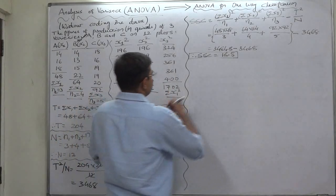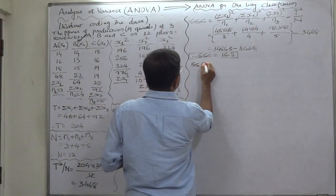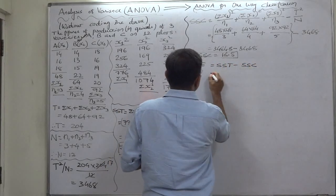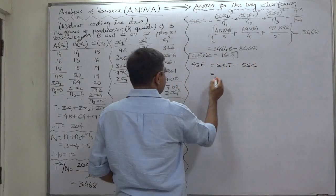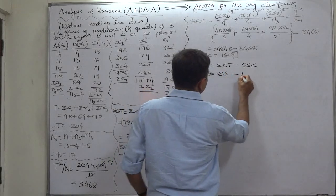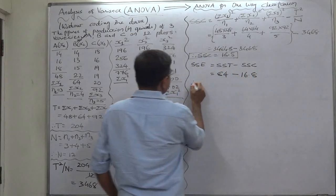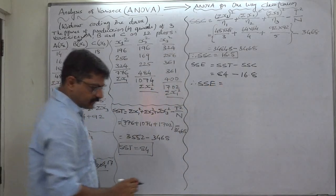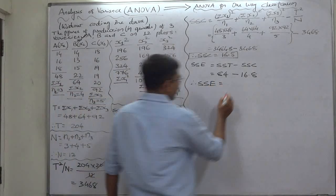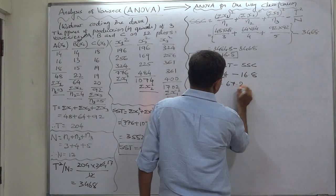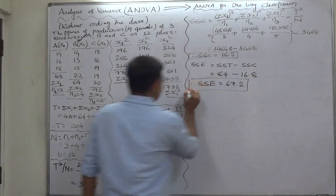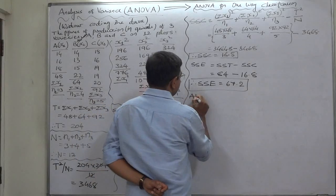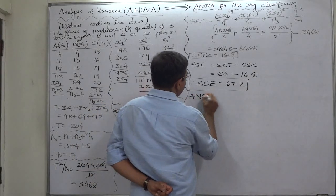Now SSE equals SST minus SSC. SST is 84 minus SSC 16.8, therefore SSE = 67.2. Now we have all three: SST, SSC, and SSE, so we can prepare the ANOVA table.